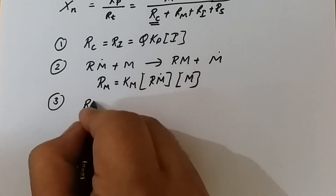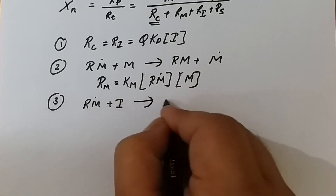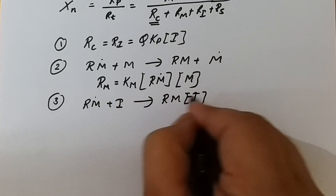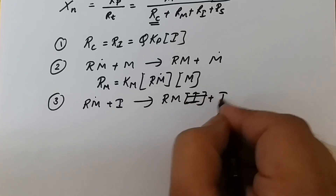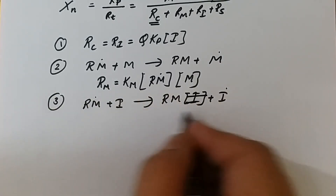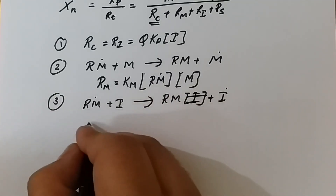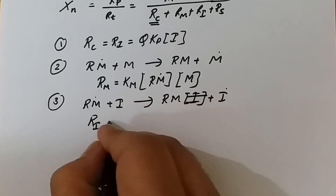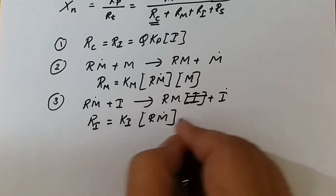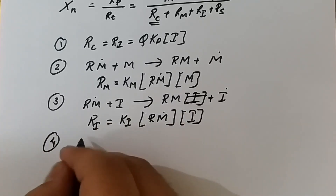The third mechanism is transfer to the initiator. The active center Rm• reacts with initiator I: Rm• plus I forms a free radical. This is termination by transfer of the active center to the initiator. Hence the rate equals ki·[Rm•]·[I].